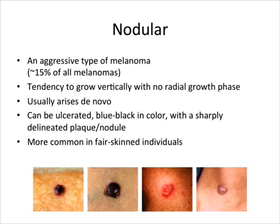The nodular type of melanoma is very aggressive, as it can grow very rapidly within weeks to months. Often arising de novo in patients over 50 years old, males more than females, they have a tendency to grow vertically through the epidermis and basement membrane rather than laterally. These nodular melanomas can vary in colour but can be ulcerated with a sharply delineated border.